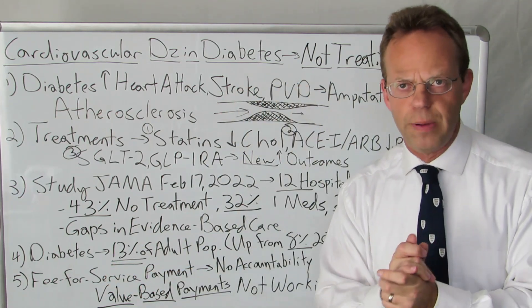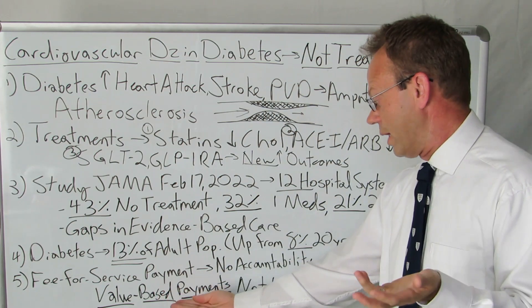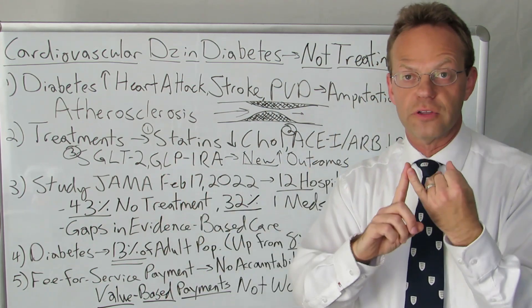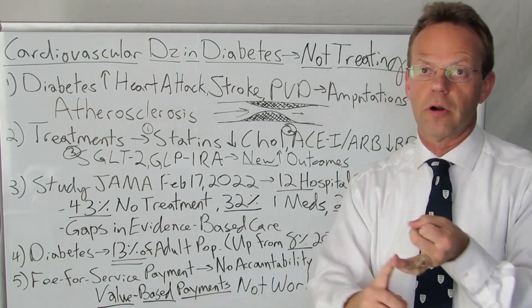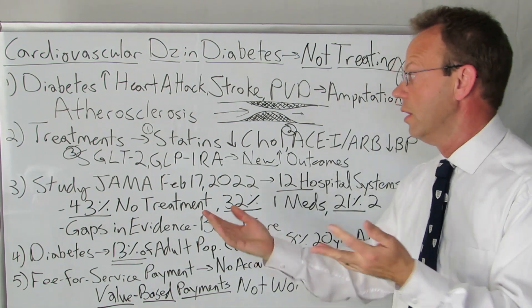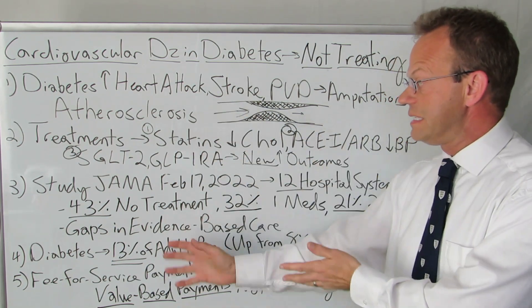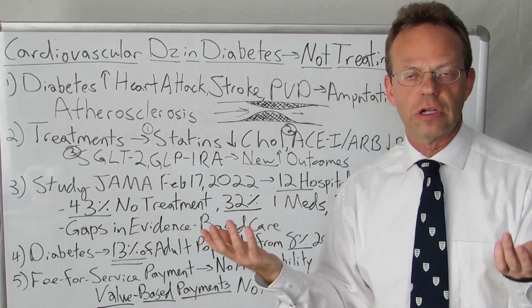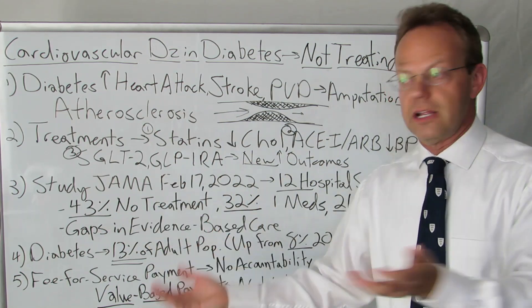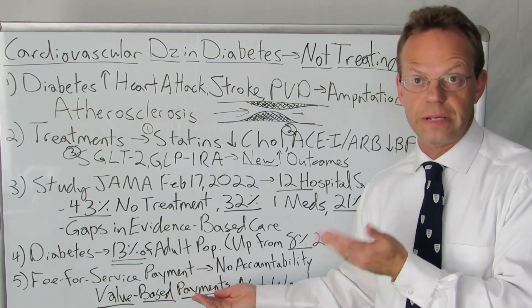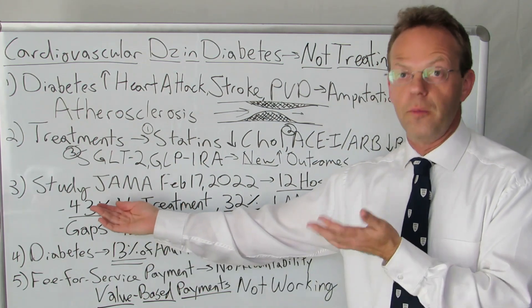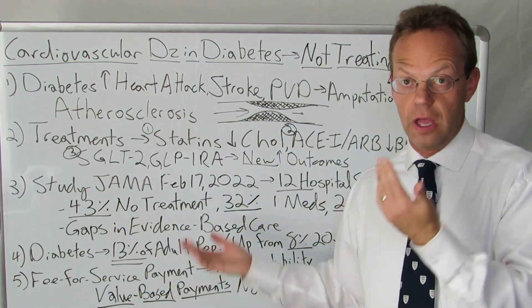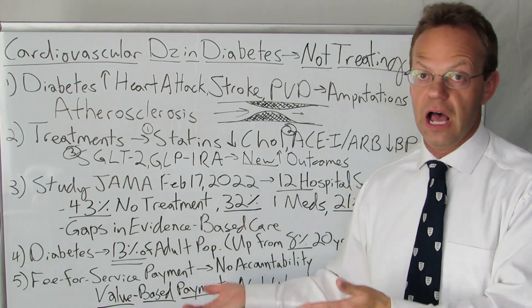Because the fee-for-service payment system pays doctors no matter what — there is no accountability for actually following evidence in payment. You might say we're moving to value-based payment and that should fix all this, but these statistics exist in a value-based payment world. All the commercial insurance and Medicare value-based care programs are not moving the needle. Almost half the people are still not getting any treatment even with value-based payments — something tells me that value-based payments are not working.